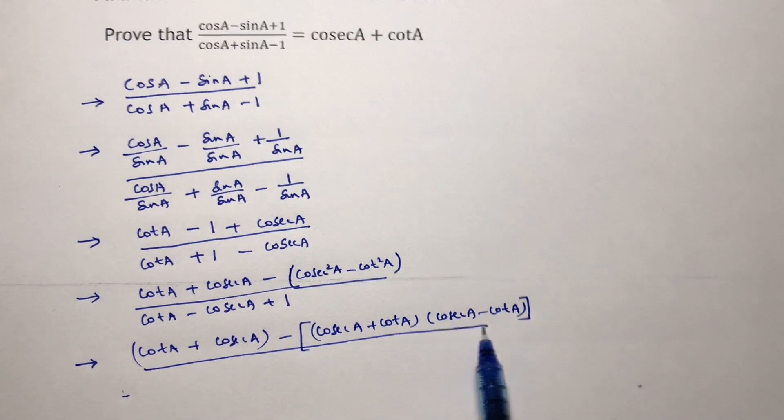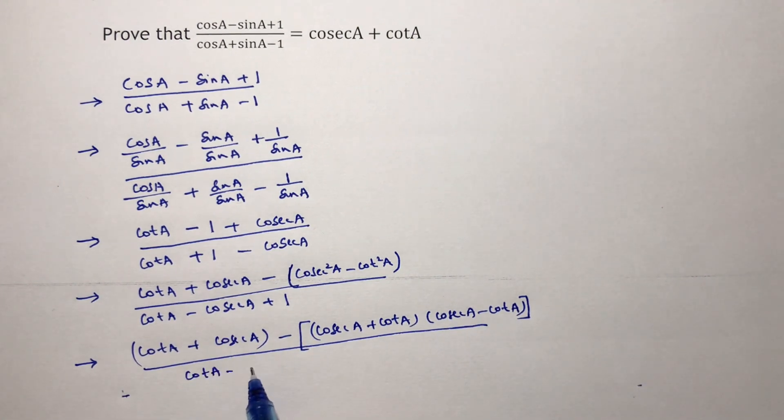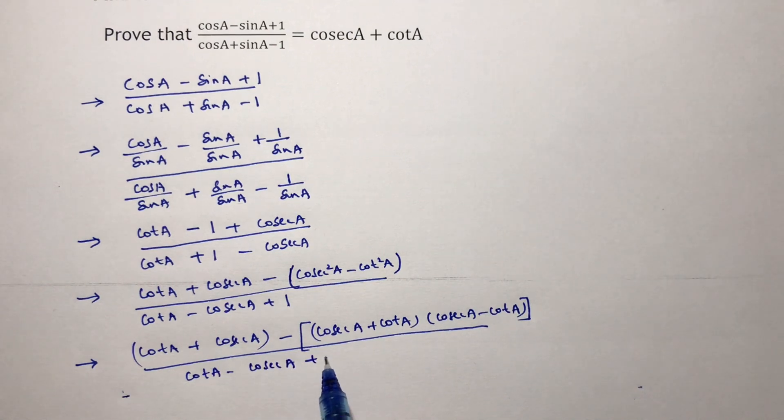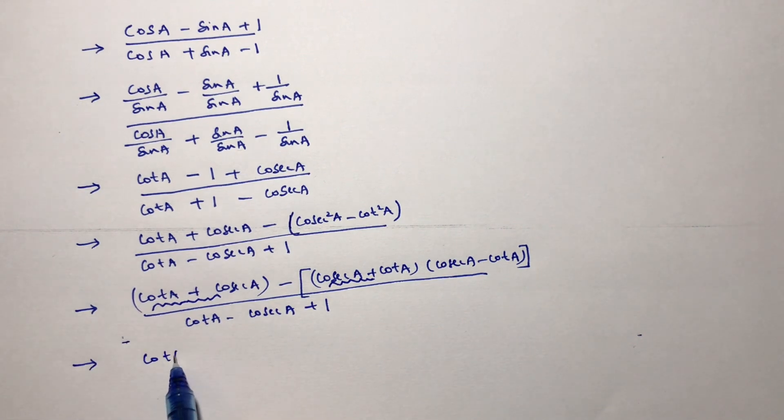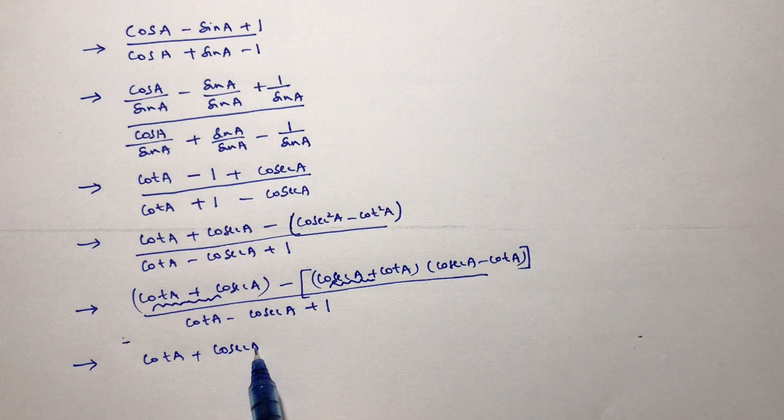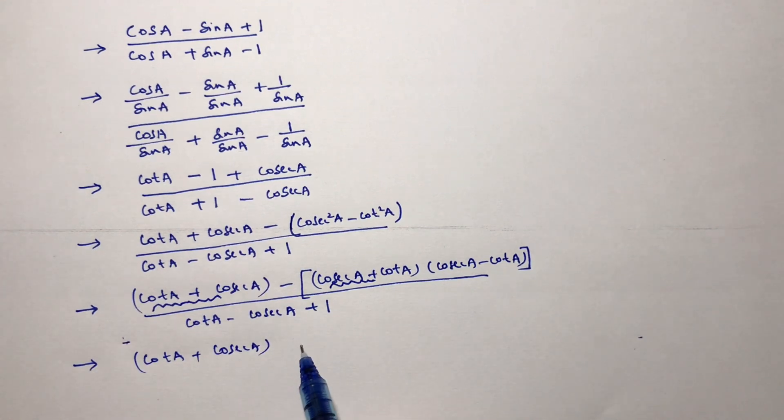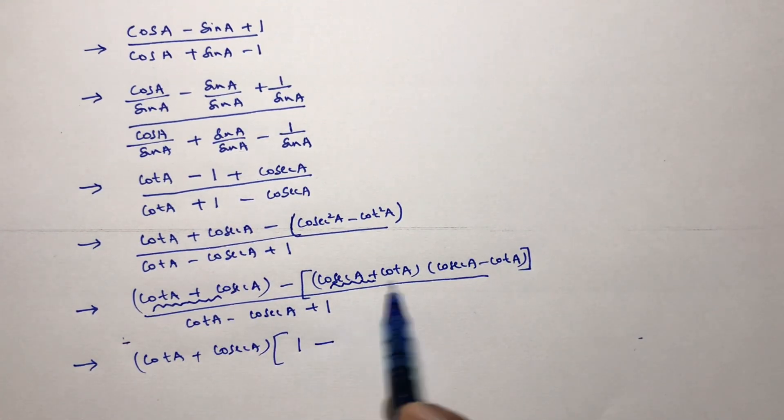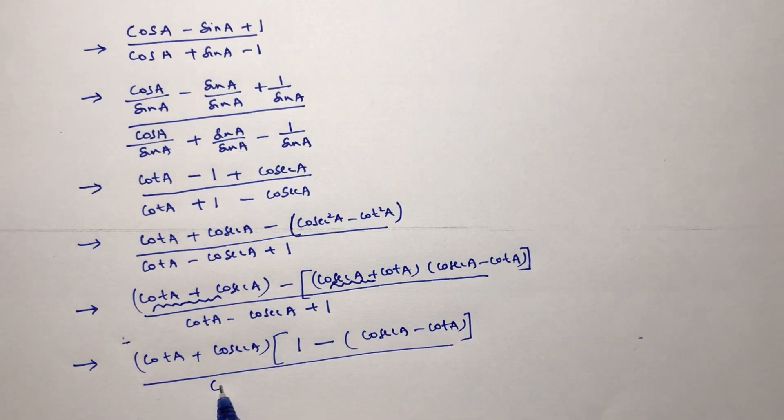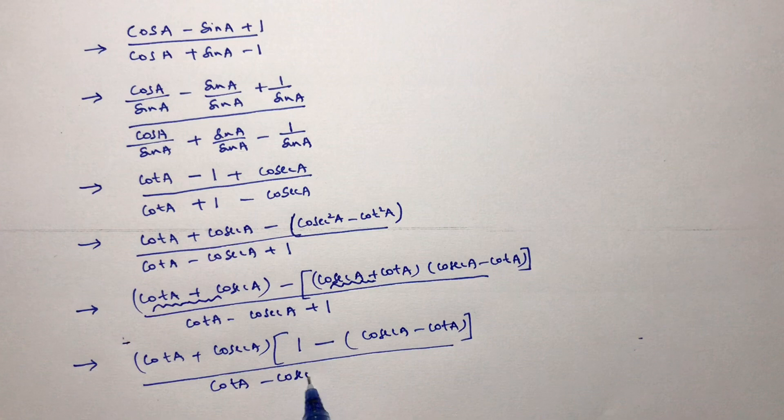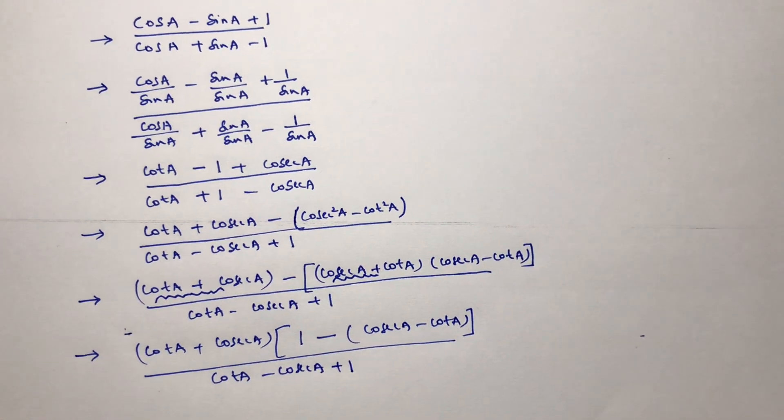Now in the numerator you can take cot A + cosec A common. If we take cot A + cosec A common, here it will be left with [1 - (cosec A - cot A)], divided by cot A - cosec A + 1.